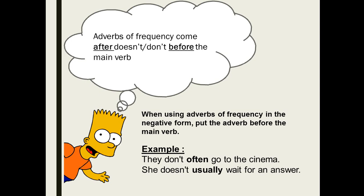She doesn't usually wait. Where is the main verb? It's 'wait.' So where should I add 'usually' or any adverb of frequency? Before the main verb — exactly.